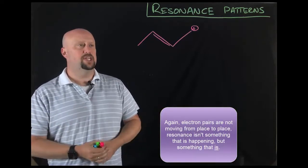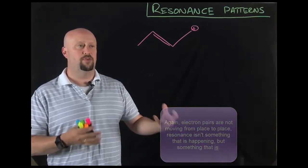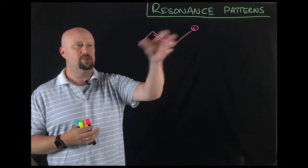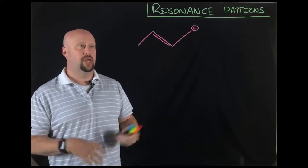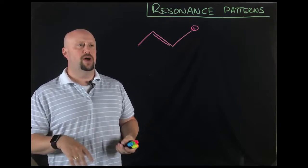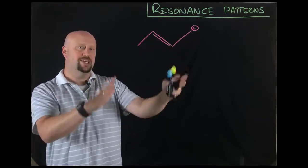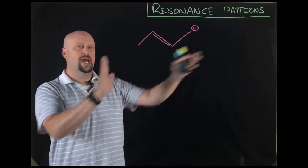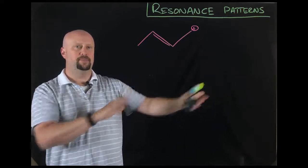In the second video, we talked about the curved arrow structure. Remember, we were showing if electrons were to move, how that would affect where the double bonds were, where the charges were, and all of those things. Because one of the ideas behind resonance is to provide a stabilizing force for the molecule by spreading out the charges.